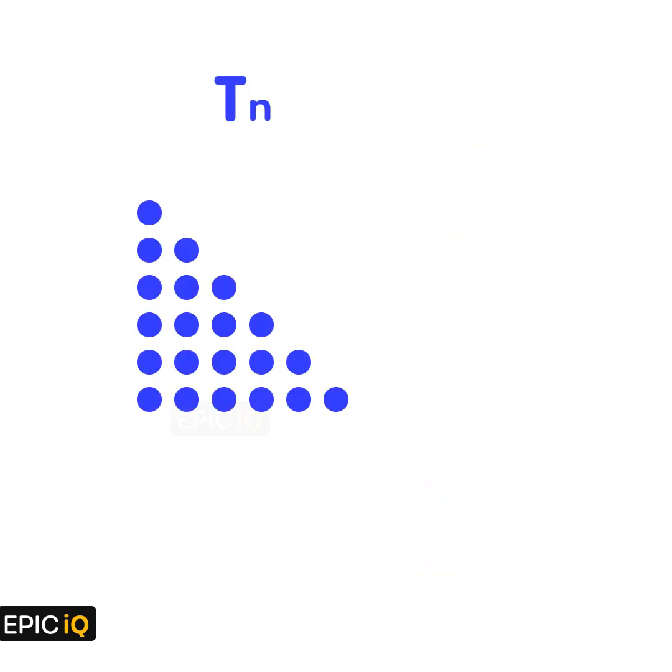Now, the nth triangular number will have n points at the base and n points in the height.